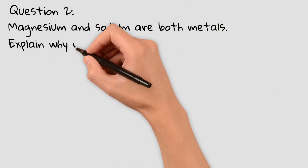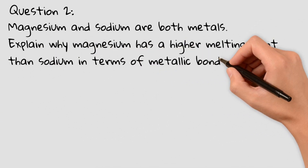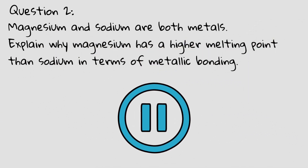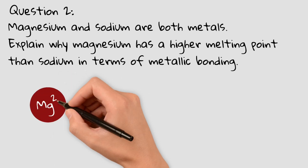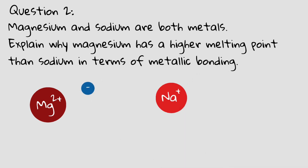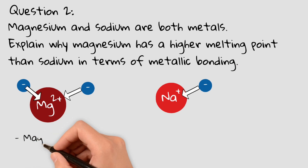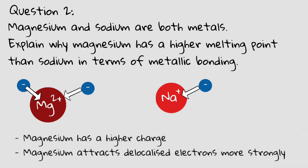Question 2: Magnesium and sodium are both metals. Explain why magnesium has a higher melting point than sodium in terms of metallic bonding. Pause the video and give it a try. Magnesium forms Mg2+ ions, while sodium forms Na+ ions. Since magnesium ions have a greater charge, they attract the delocalized electrons more strongly, creating stronger metallic bonds. As a result, more energy is needed to break the metallic bonds in magnesium, giving it a higher melting point than sodium.